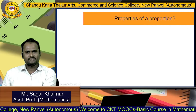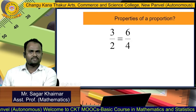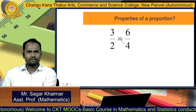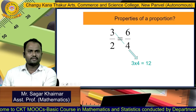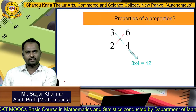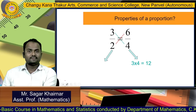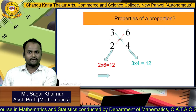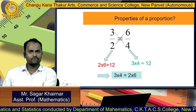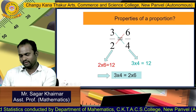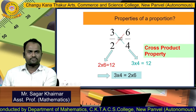Now we study the properties of proportion. Suppose 3 by 2 equal to 6 by 4. Then this can be written as 3 into 4 equal to 12, and 6 into 2 equal to 12. So ultimately we get 3 into 4 is equal to 2 into 6, that is equal to 12. This is called the cross product property.